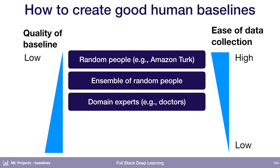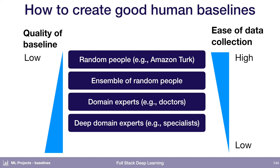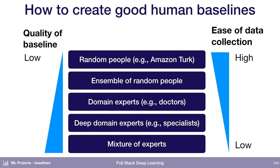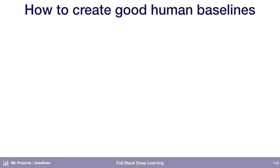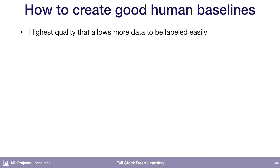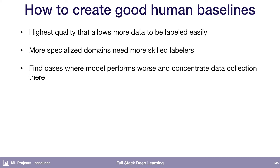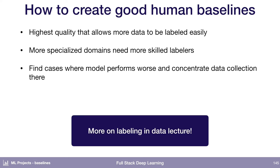You can go to domain experts for your problem, and you can do the same thing by ensembling a group of experts. The question is how do you pick where on that trade-off curve you should be? You should go with the highest quality that allows you to go back and get more data if you need to. If world-leading experts agreed to give you an hour of their time but you're never going to talk to them again, it's probably not a good idea. You'll invariably need to go back and collect more data as you improve your model. For more specialized domains, concentrate the time of your most expensive labelers on the hardest examples you have.